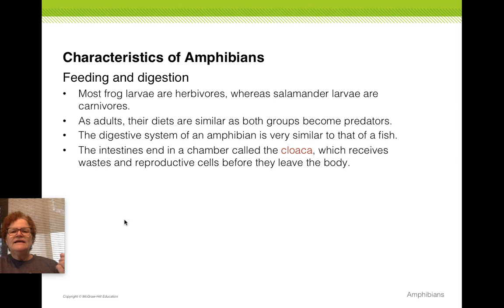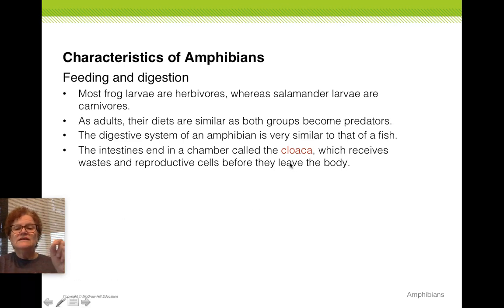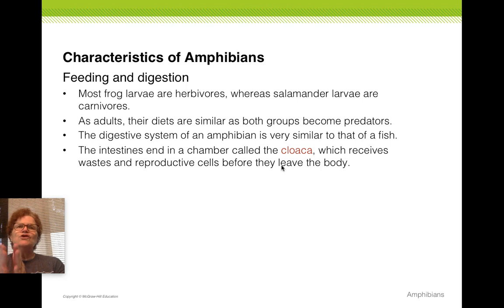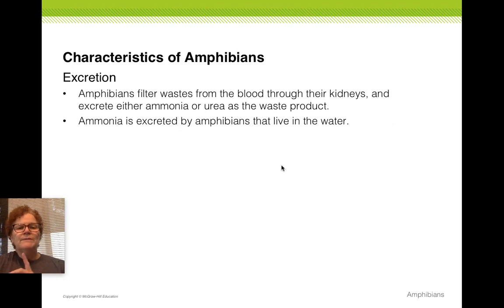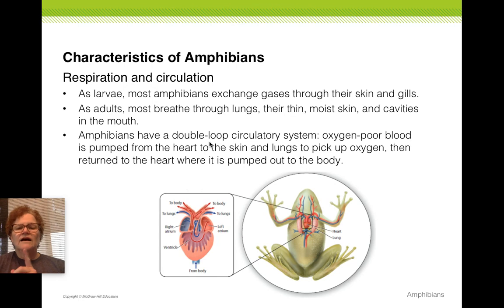Let's look at feeding and digestion. The new digestive organ that we're going to see here is the cloaca. Like a fish, we have one body opening — so solid waste, liquid waste, and egg and sperm would all leave the body through one body opening. Excretion: now we have ammonia or urea being formed as a waste product — that's new.